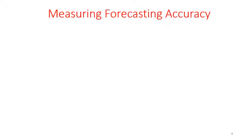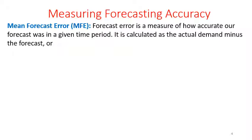Measuring forecasting accuracy. First we introduce a term called MFE, which means mean forecast error. This particular measure determines how accurate the given forecast is for a given time period. It is calculated as the actual demand minus the forecast — in other words, the error for time period t is equal to A_t minus F_t, that is the actual demand for time t minus the forecast for time t.